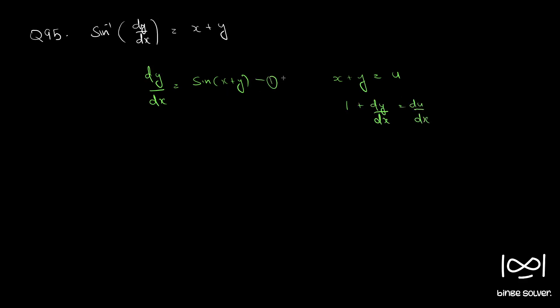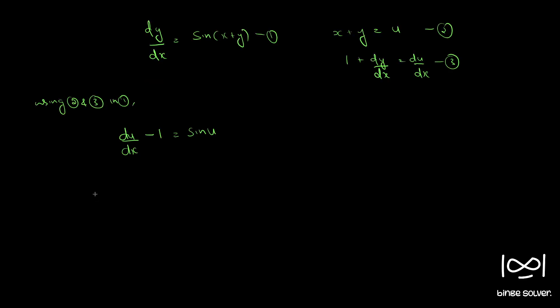Let this be equation 1, this be 2, this be 3. So using 2 and 3 in 1 we get du by dx minus 1. Dy by dx becomes du by dx minus 1, sin x plus y becomes sin u. So rearranging we get du by dx equal to sin u plus 1.